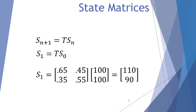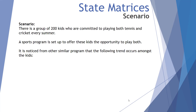Welcome mathematicians. In today's video we'll be looking at state matrices — one of our many matrices videos. Let's have a look at our scenario. There's a group of 200 kids who are committed to playing both tennis and cricket every summer. A sports program is set up to offer these kids the opportunity to play both, and it is noticed from other similar programs that the following trend occurs amongst the kids.